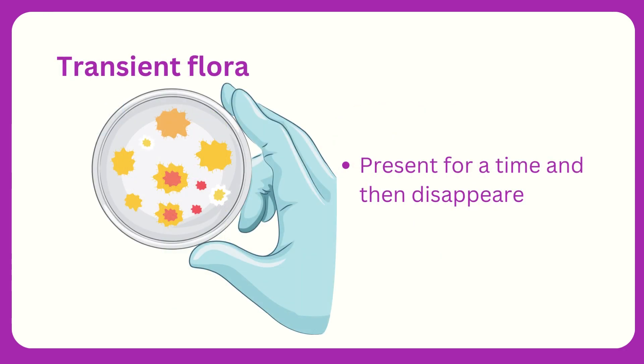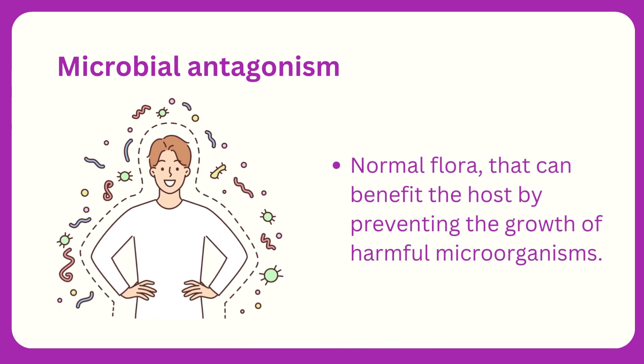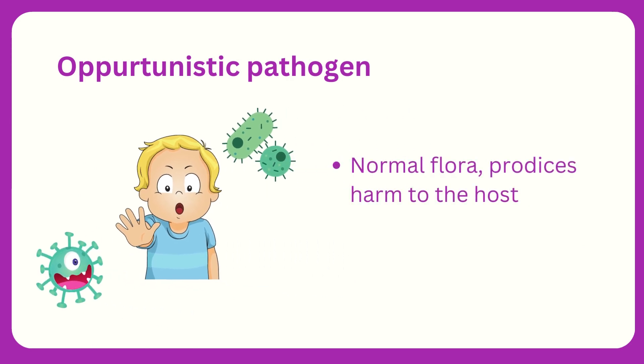Microorganisms that may be present for a time and then disappear are called transient flora. Normal flora that can benefit the host by preventing the growth of harmful microorganisms is called microbial antagonism. Under certain conditions, when normal flora can produce harm or disease in the host, it is known as an opportunistic pathogen.